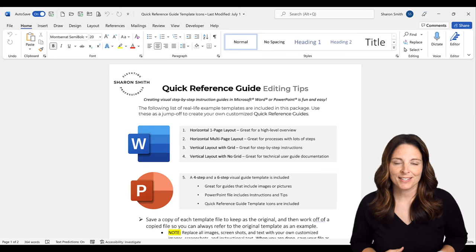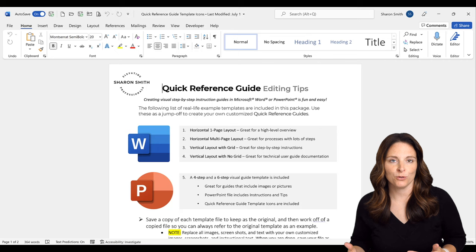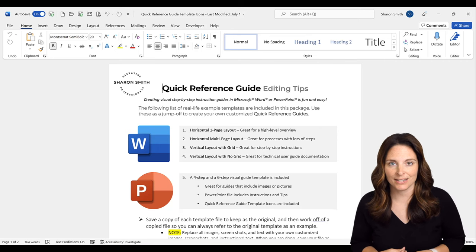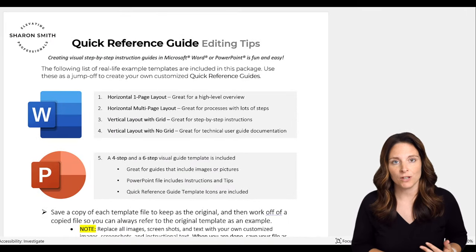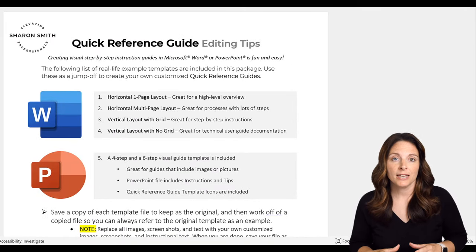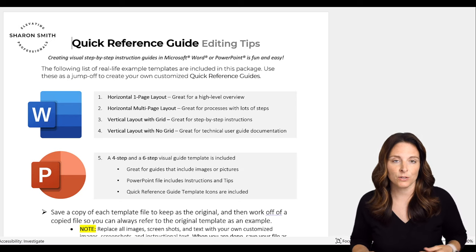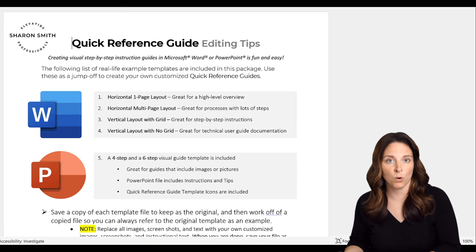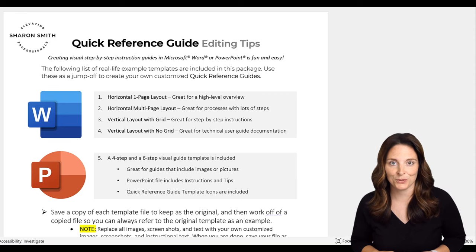When you go to create your quick reference guide, the first thing you want to do is think through all of the steps that you want to capture and relay to your audience, and that will help you determine a layout. So if you want to use Microsoft Word or PowerPoint, you can use either a vertical or horizontal layout. Depending on how many images or screenshots you want to use, or if you need to include more instructional text, it's going to help you determine what type of layout you might want to use.